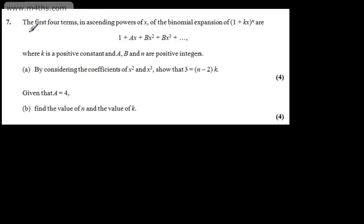This is question number 7. The first four terms in ascending powers of x in the binomial expansion of (1 + kx)^n are 1 + ax + bx² + bx³, where k is a positive constant and a, b and n are positive integers. In part a, for four marks, by considering the coefficients of x² and x³, show that 3 equals (n minus 2) multiplied by k.